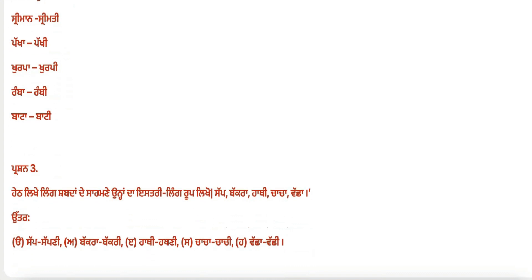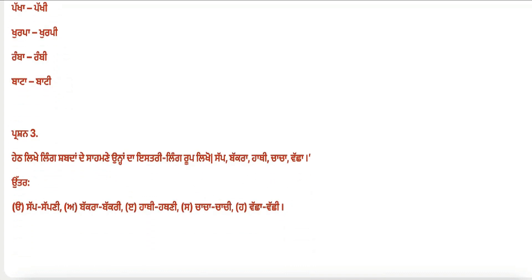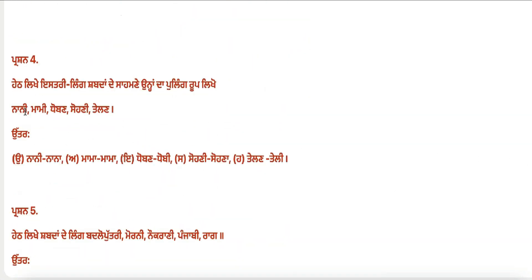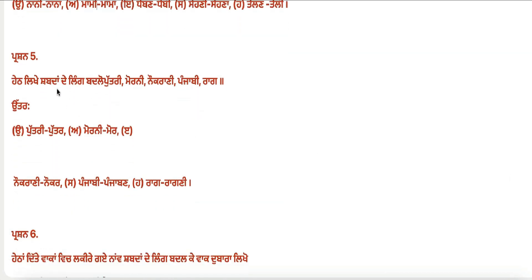Now write the feminine (istri ling) form of the following words. For example: saap–sapni, bakra–bakri, haathi–hathni. Also write the istri ling form opposite the given masculine words. For example: morni — its masculine is mor; nokrani — its masculine is nokar.